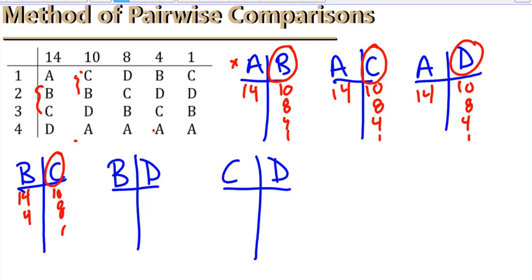B versus D. We have 14 votes for B, another 10 votes for B, 8 votes for D, 4 and 1, B wins.